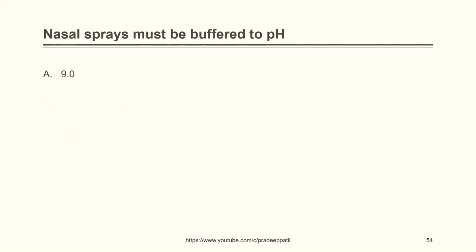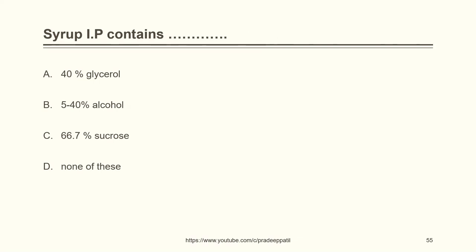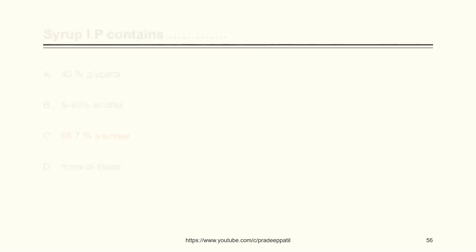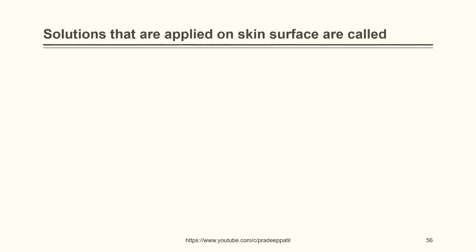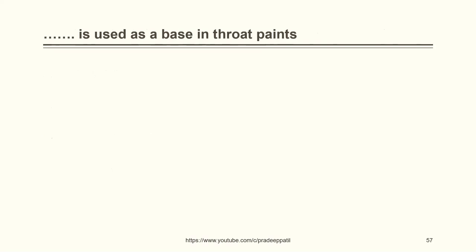Nasal sprays must be buffered to pH 6.2. Syrup IP contains 66.7% sucrose. Solutions applied on skin surface are called topical solutions. Glycerin is used as a base in throat paints to improve the viscosity of the formulation. Solubility of iodine can be improved in Mandel's paint by using potassium iodide, because iodine and potassium iodide combine to form polyiodides which are soluble in water or alcohol.